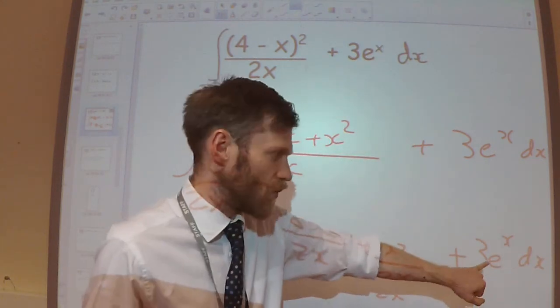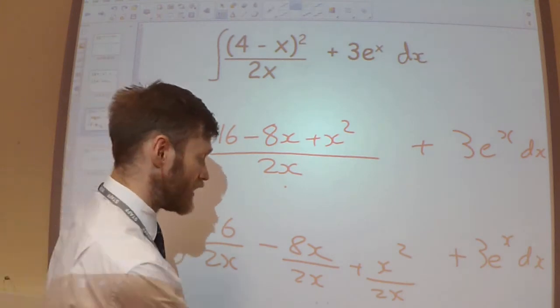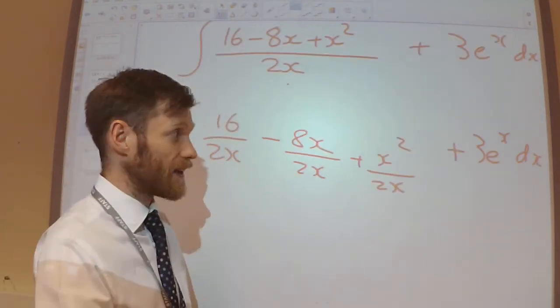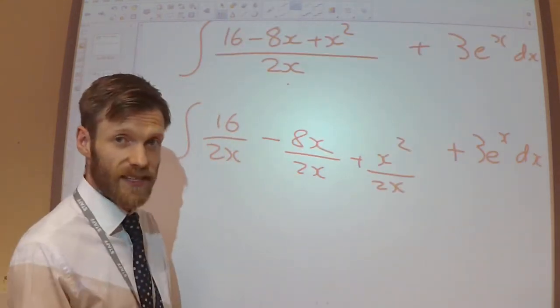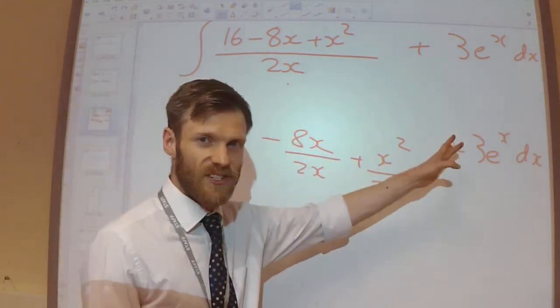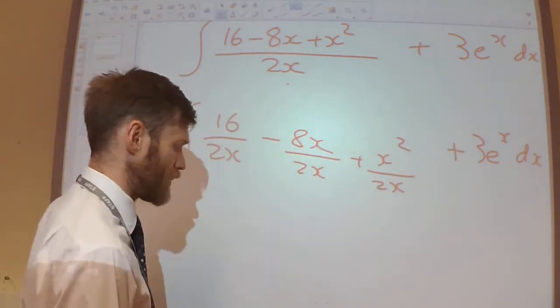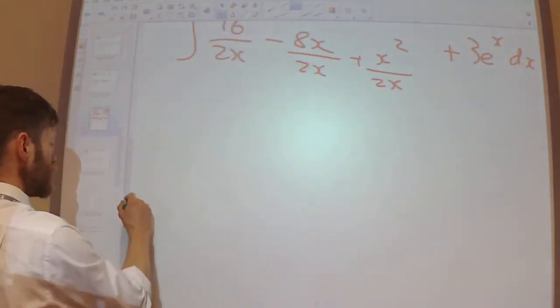I could write down what the integral of 3e to the x is really easily. I know it's 3e to the x, but I'm not going to do that until the very end. I don't want to start doing integration when I'm not ready to integrate the first one. I want to do all the integration in one go.